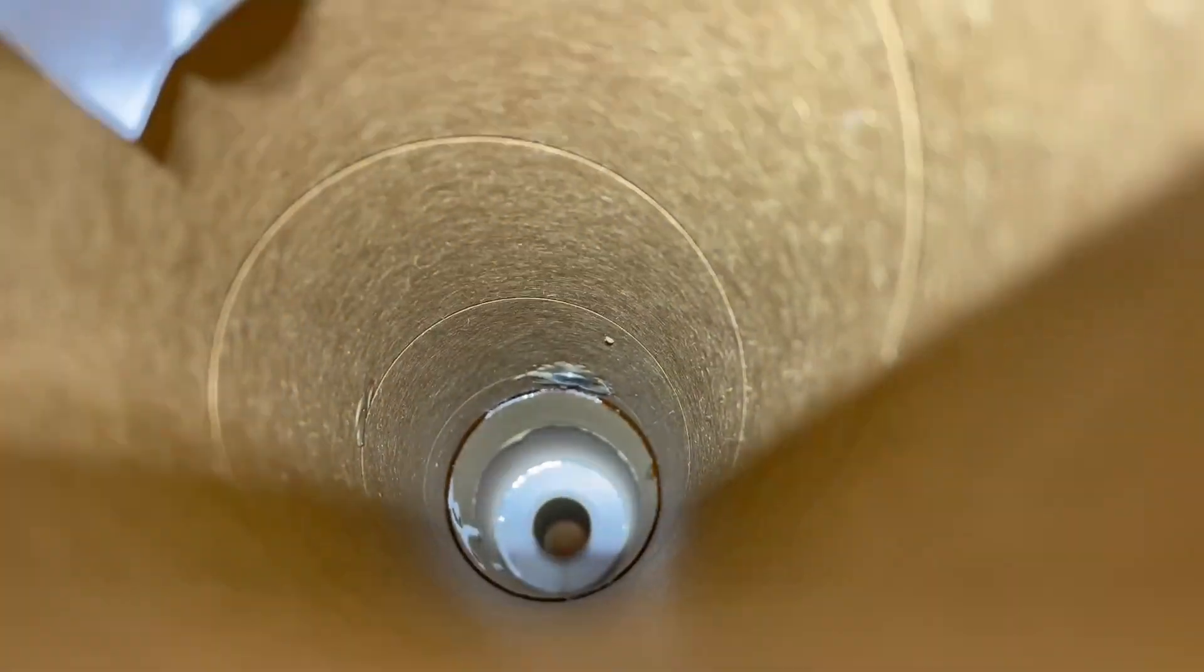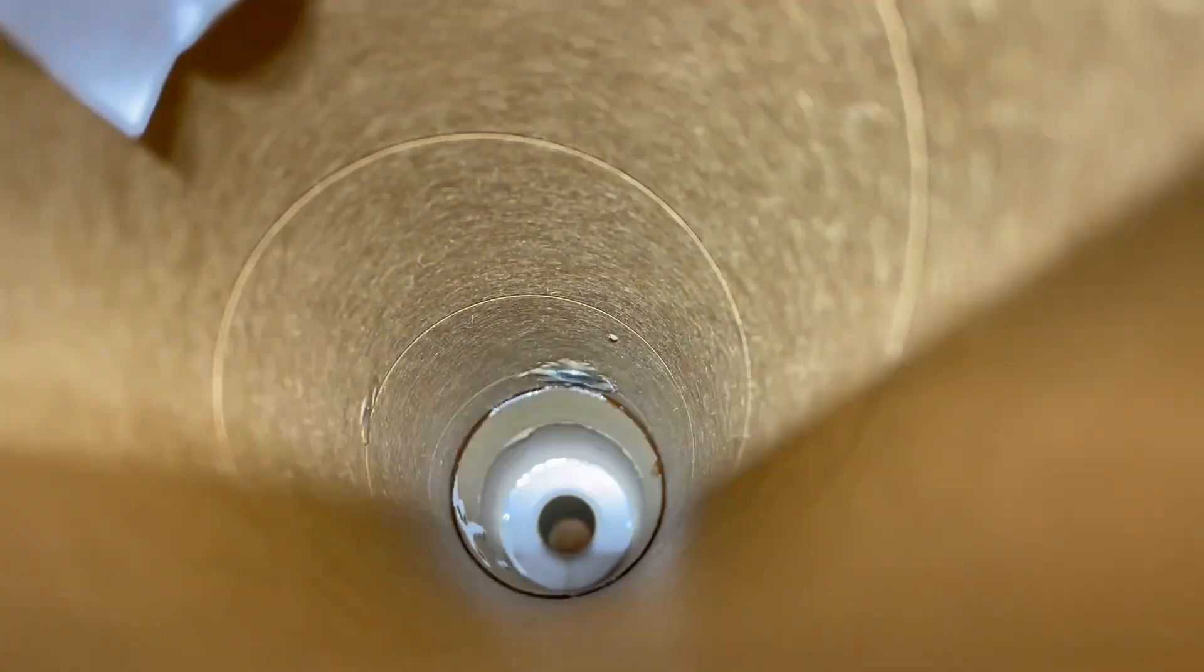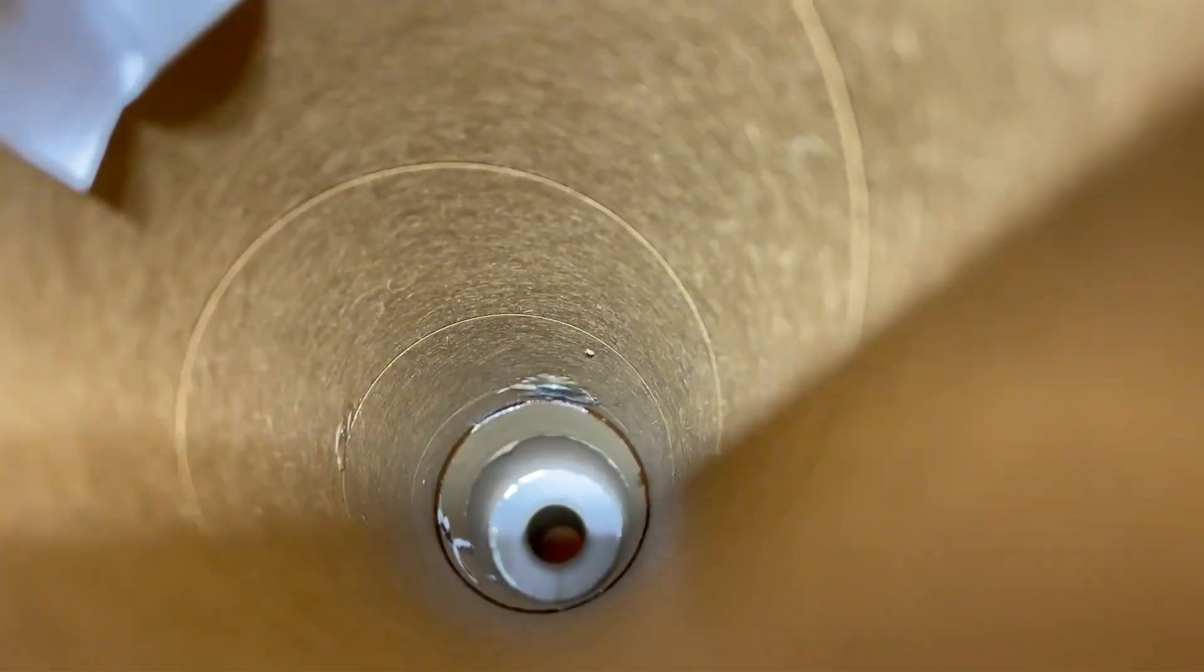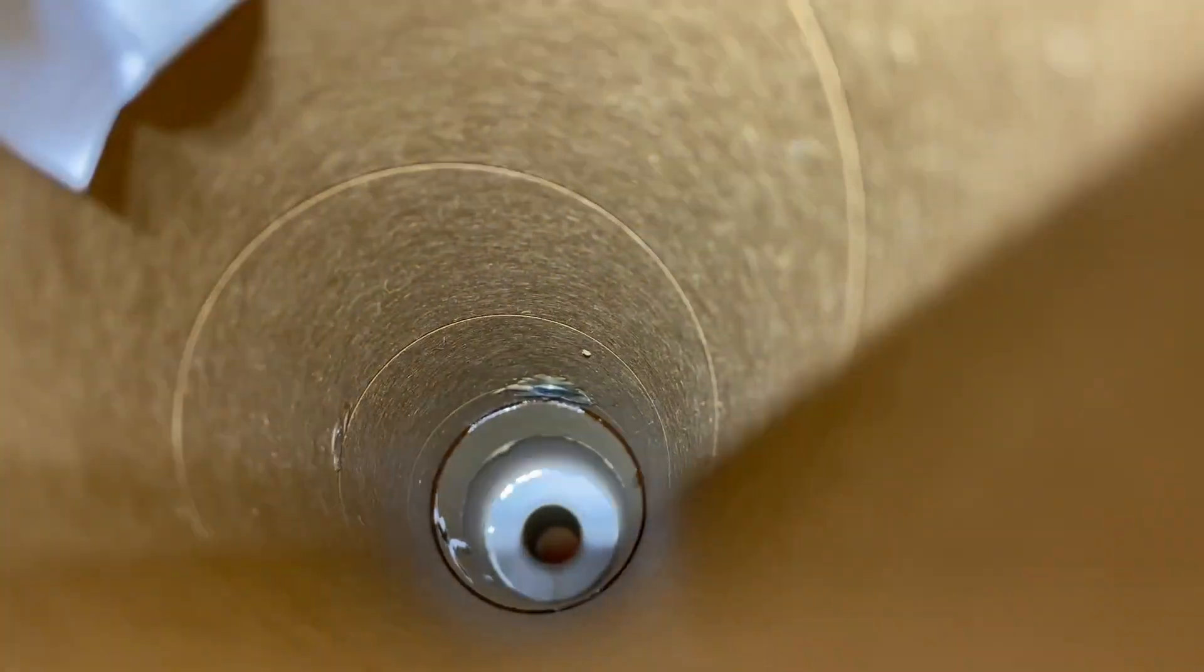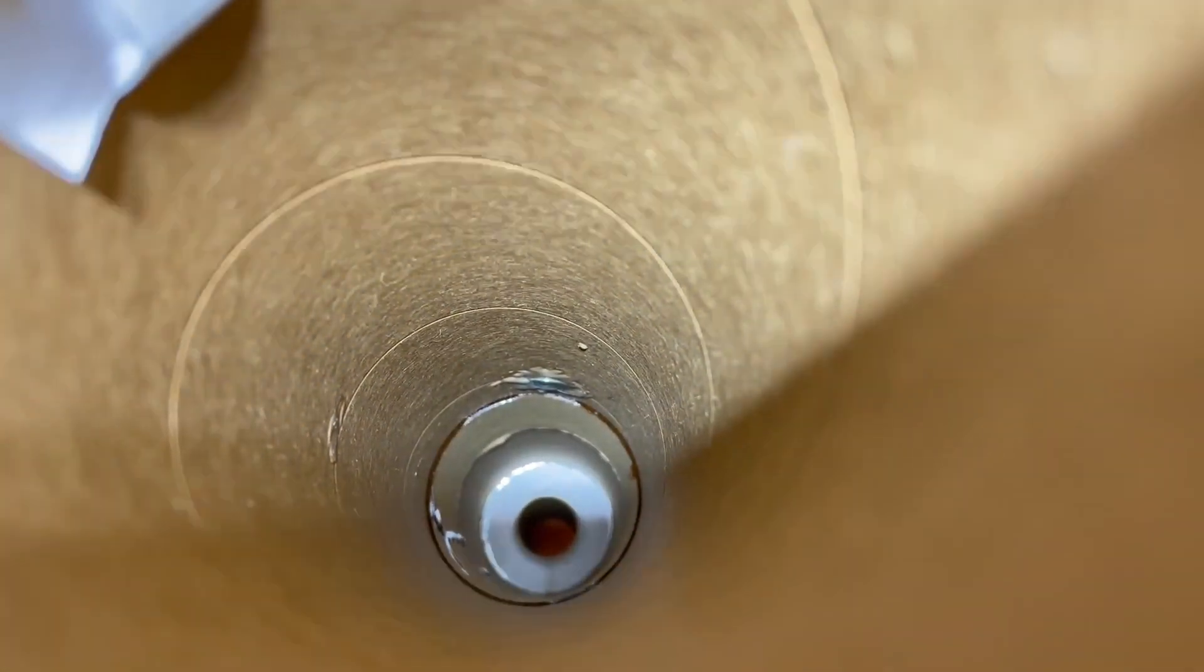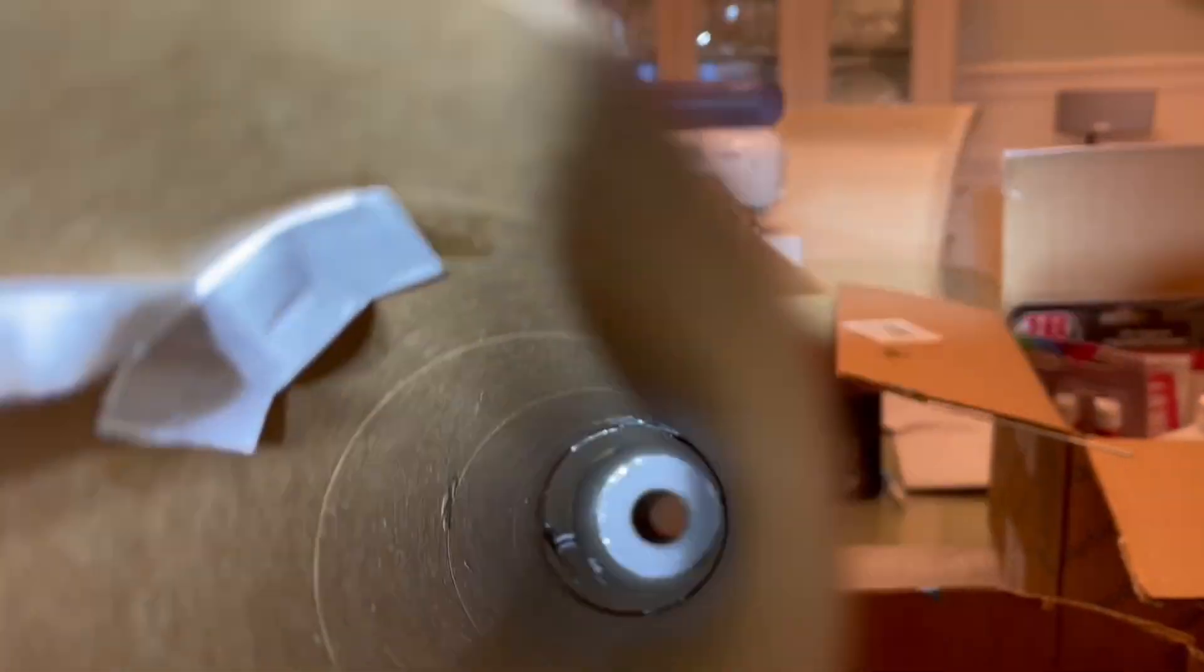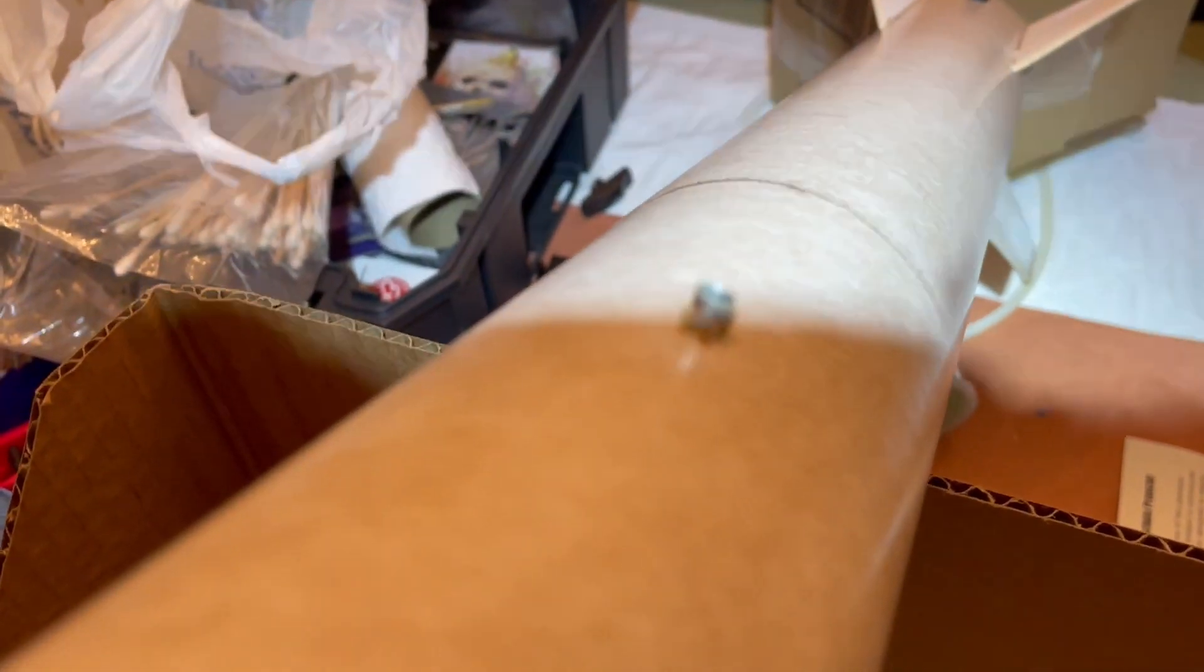So hopefully you can see up there I've got that rail button glued in with rocket epoxy. I don't know why this LED headlamp is flashing like that, but you can see I've got the button in there. There it is, right there.